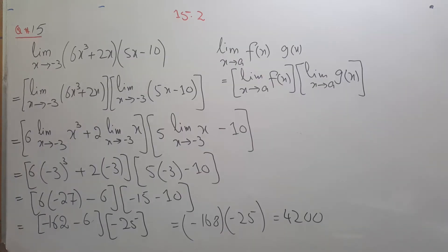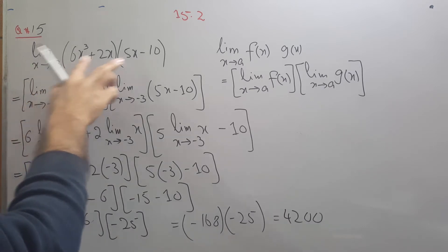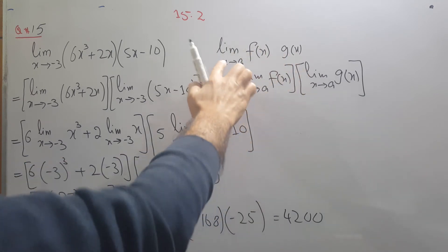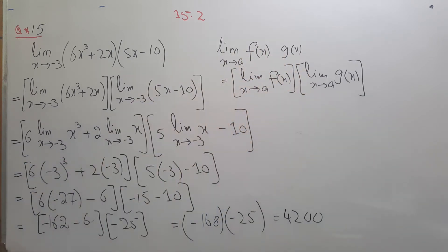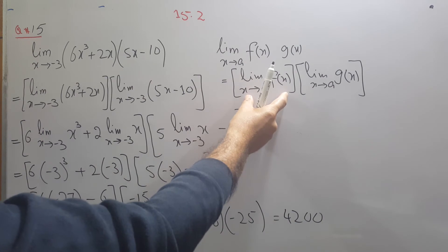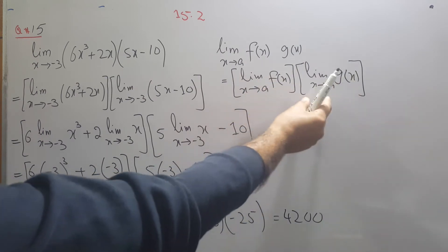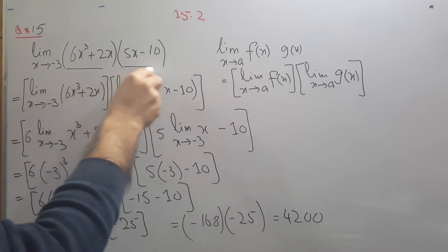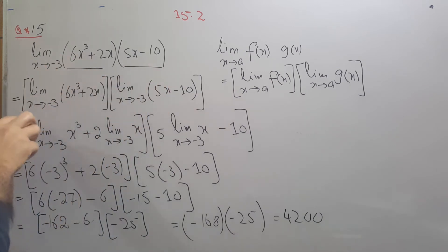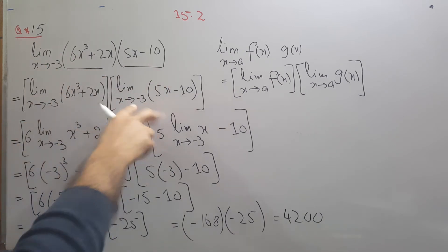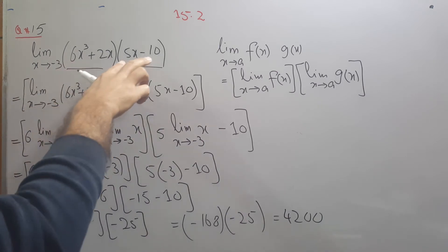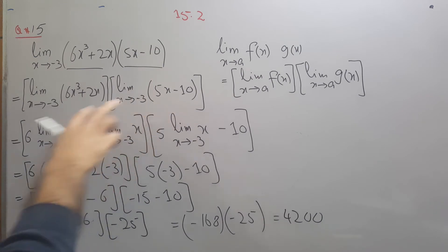Question number 15 uses a different property: two functions are multiplying. The property states that if you have two functions multiplying and you apply the limit, you can apply the limit on each of them separately and then multiply. So we apply the limit on the first function and the limit on the second function, then multiply.